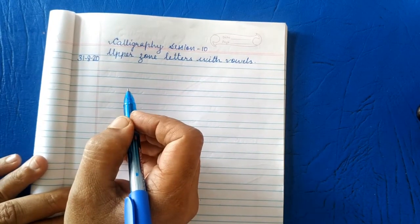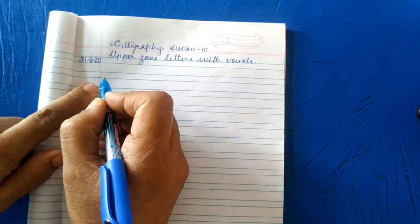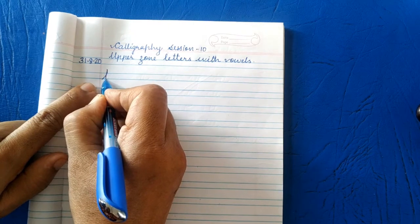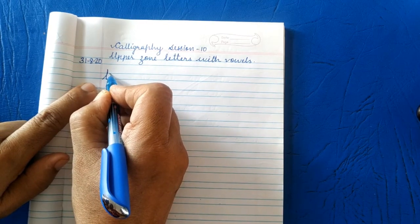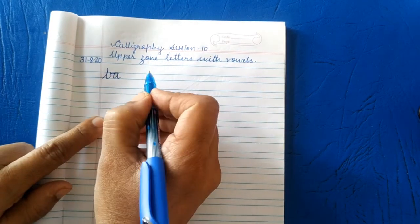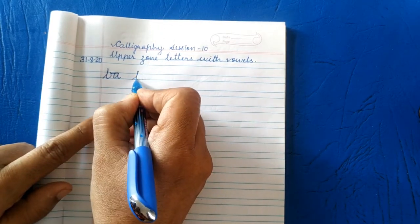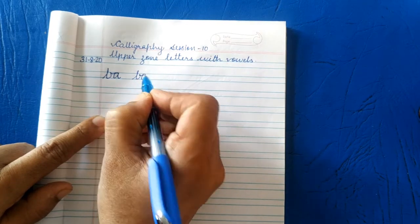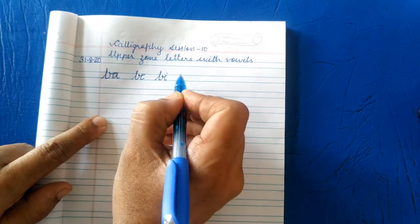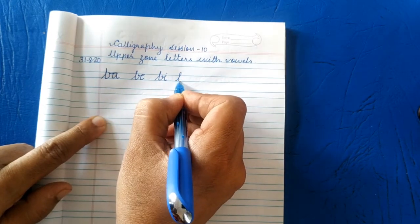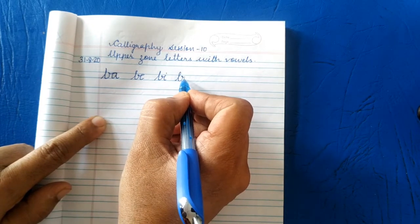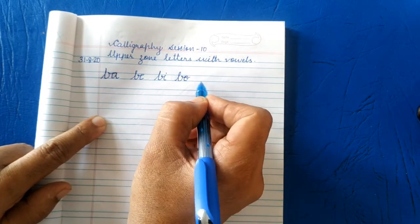Let's start. First letter is B. Make upper line, touch here, we will write A, BA. Next BE, next BI, next BO and BU.